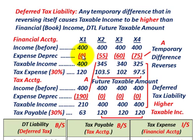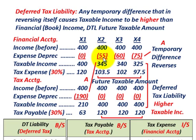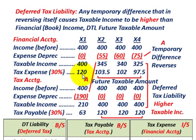This is what we're talking about with this timing difference or temporary difference. For financial accounting, in year X1, we're not going to have any expense reduction due to depreciation, but for the next three years we're going to recognize some reduction or expense items. For tax accounting, in year X1, we recognize the entire depreciation for all four years — let's say it's $190,000.